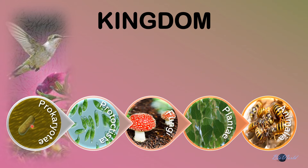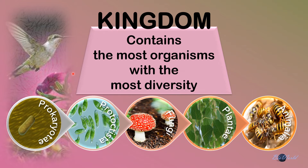We will learn more about each kingdom when we study biodiversity. Coming back to the concept of kingdom — if 5.3 million organisms are divided into five different kingdoms, each kingdom will contain a huge number of organisms. Among the seven taxons, kingdom is the taxon that contains the most organisms, and the organisms in each of these kingdoms look very different from one another. This means the kingdom also has the most diversity.